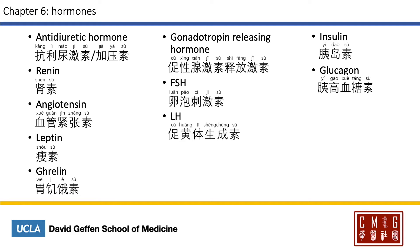The antidiuretic hormone is 抗利尿激素. The other name for it is vasopressin, which is 加压素. Renin is 肾素. Angiotensin is 血管紧张素, 紧张 meaning to tense. Leptin is 瘦素. And ghrelin is 胃饥饿素. The gonadotropin-releasing hormone will be 促性腺激素释放激素. The follicle stimulating hormone is 卵泡刺激素. And the luteinizing hormone is 促黄体生成素 — the corpus luteum being 黄体. Insulin is 胰岛素. And glucagon is 胰高血糖素.